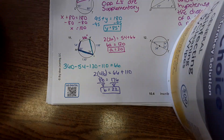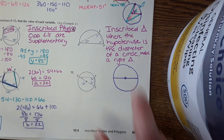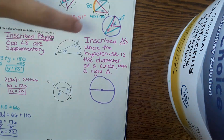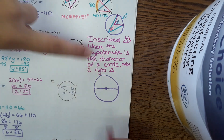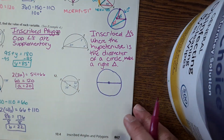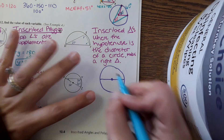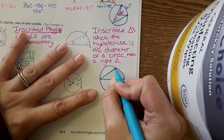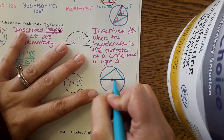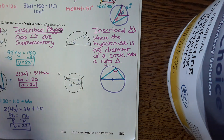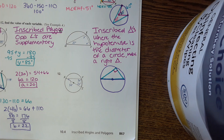Now, inscribed triangles: if the hypotenuse of an inscribed triangle is the diameter of a circle, then that triangle is a right triangle. From there you can use trigonometry or the Pythagorean theorem to solve for dimensions in that triangle.